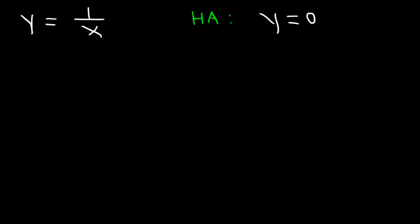The degree of the denominator is 1 — that's the exponent of the x variable. The degree of the numerator is 0 because there is no x variable there; it's a constant. So therefore, it's bottom-heavy — the degree of the denominator is greater than that of the numerator — so the asymptote is just y equals 0.